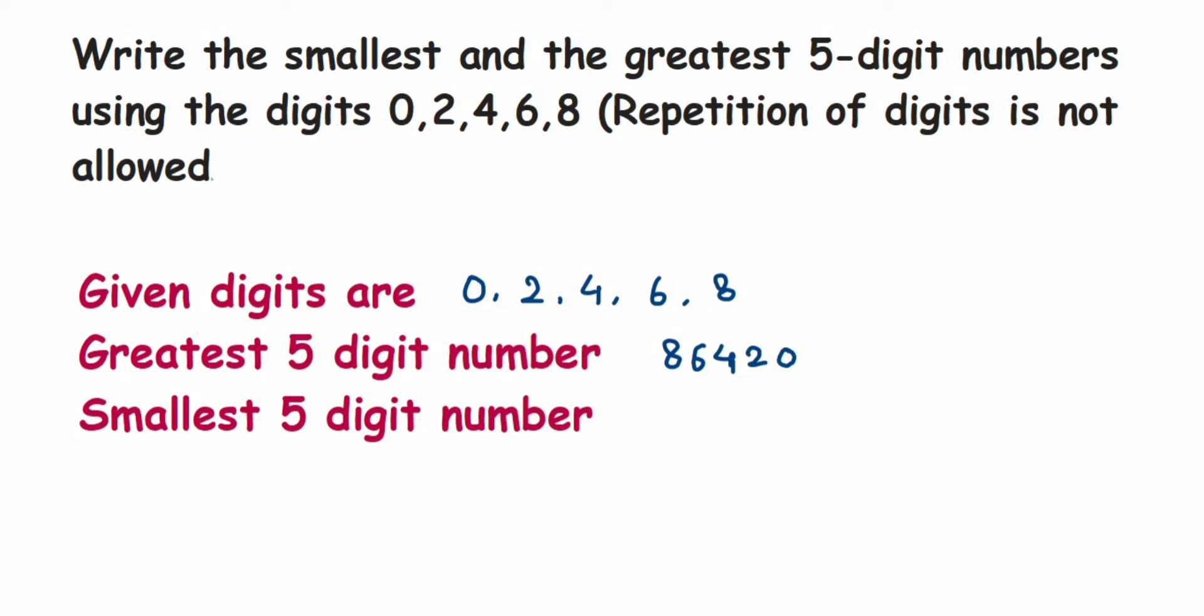But if you look here, the smallest digit given is zero. If I start from zero, what happens? Smallest digit is zero, and the next one is 2, 4, 6, and 8. So this is not forming a five-digit number, it's forming a four-digit number because zero doesn't have any value when we keep it in the beginning of the number.